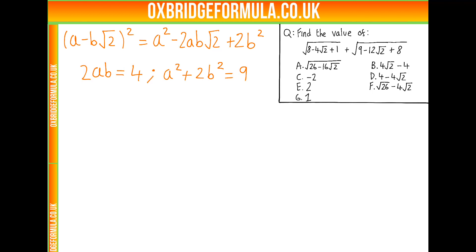And we see that a is 1, and b is 2, works here, because 2 times 1 times 2 is 4. a squared, 1, plus 2 times 2 squared, 8 is 9. And so we know 8 minus 4 root 2 plus 1 is (1 minus 2 root 2) all squared.